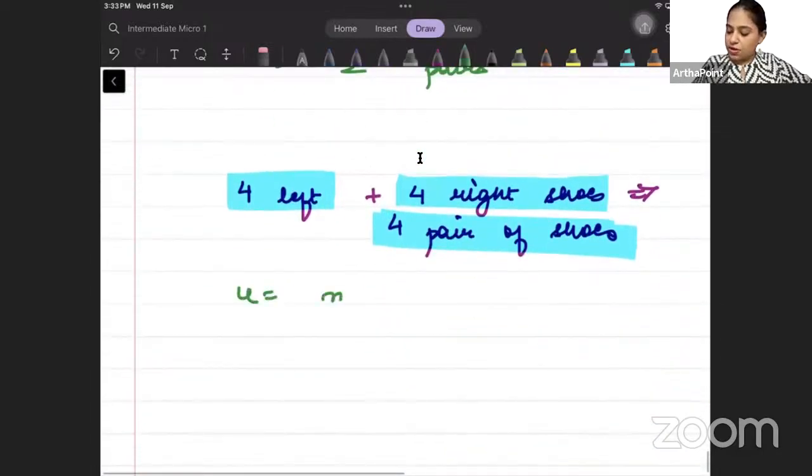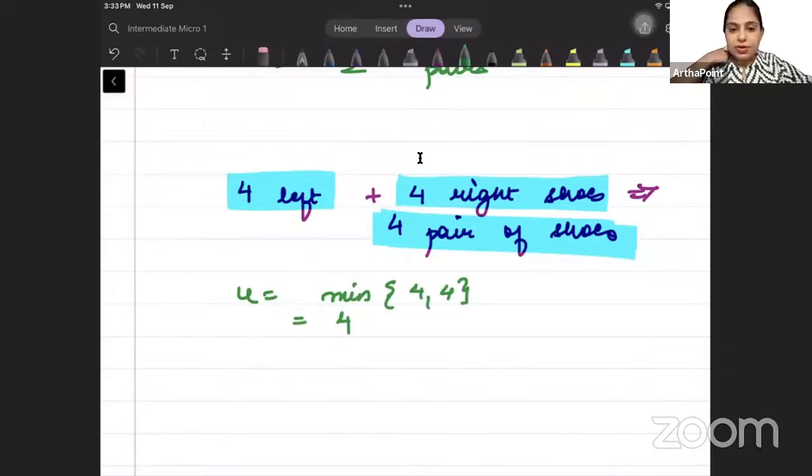Here, u is equal to min of 4, 4. That means, both are the same number. So, min of 4 and 4 will be 4. So, 4 pair.